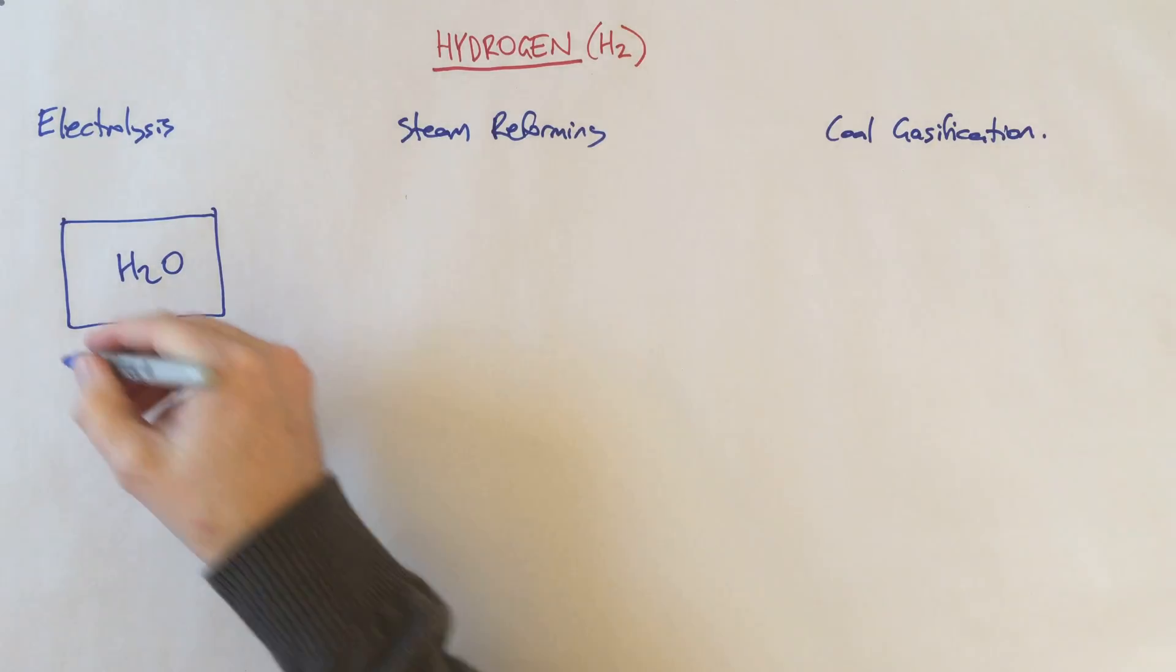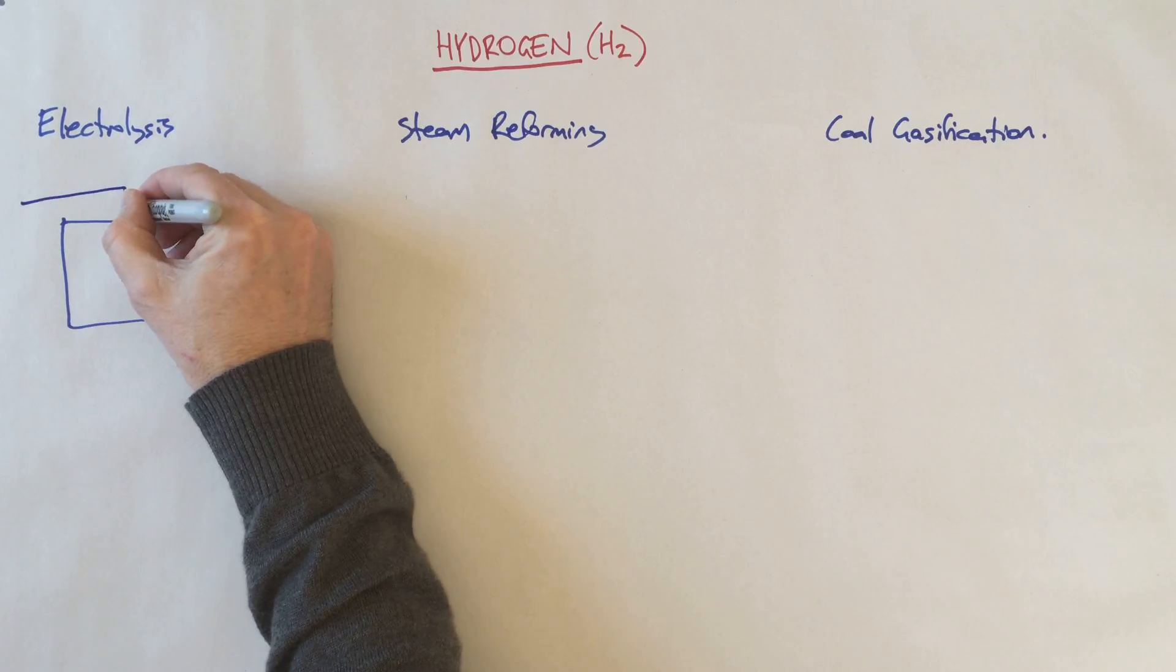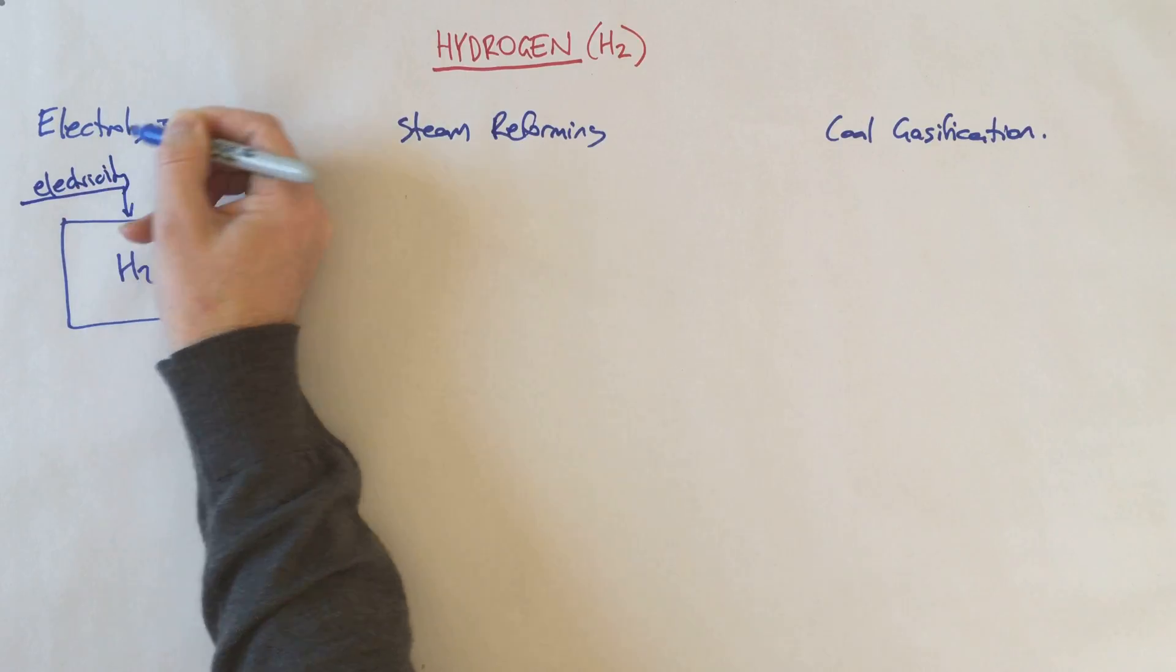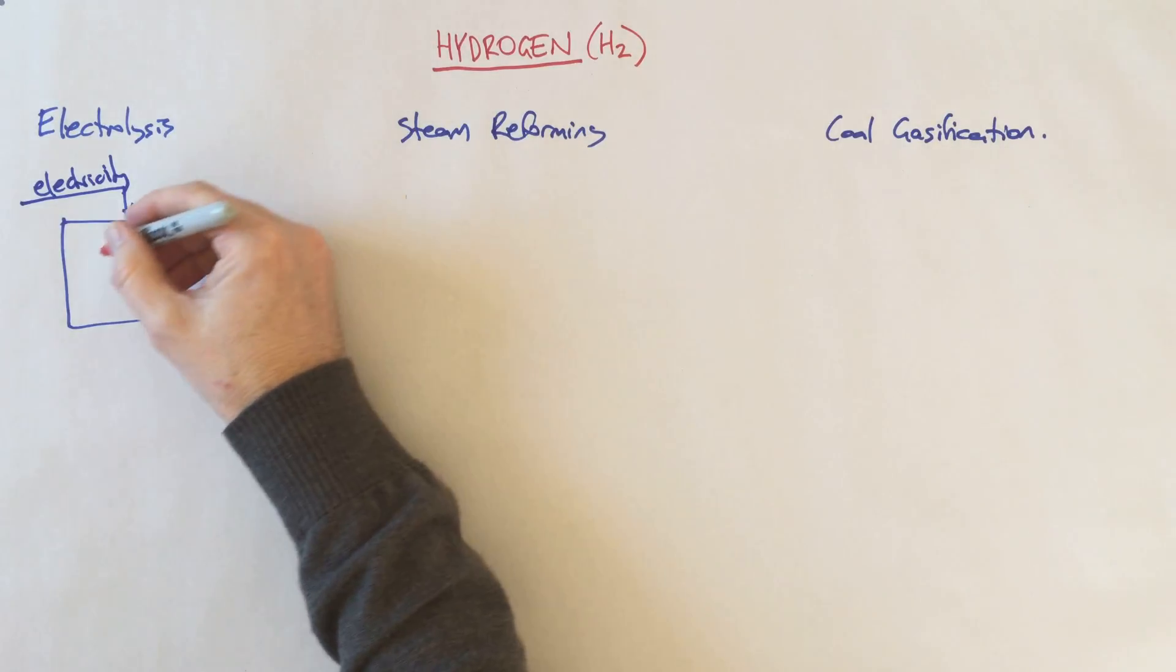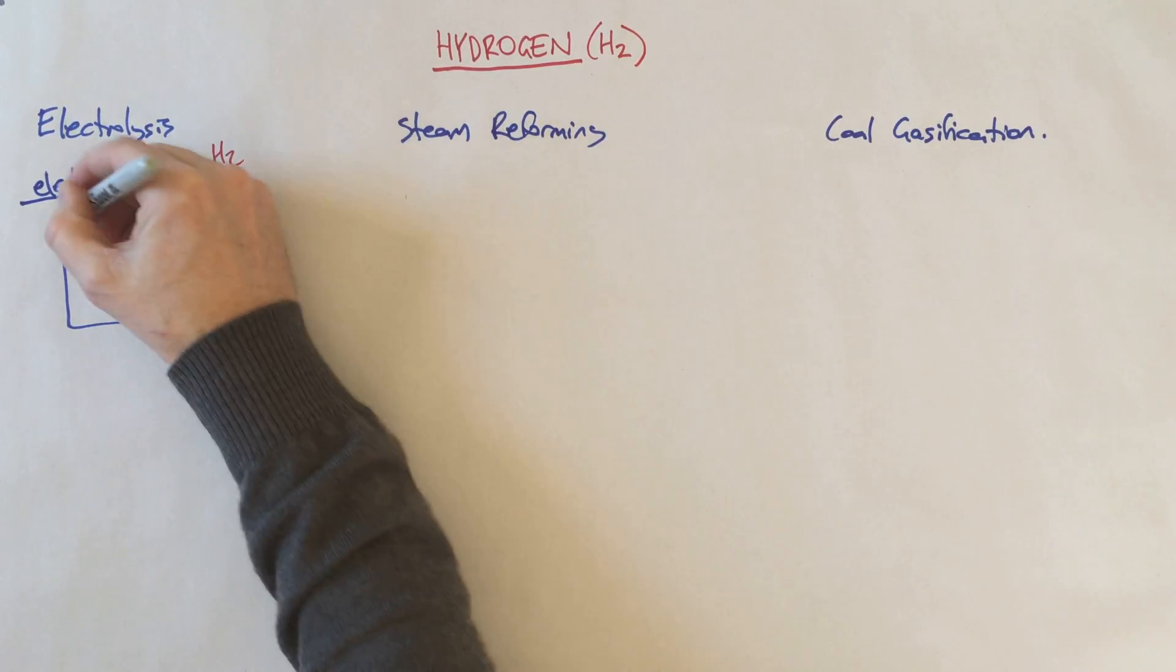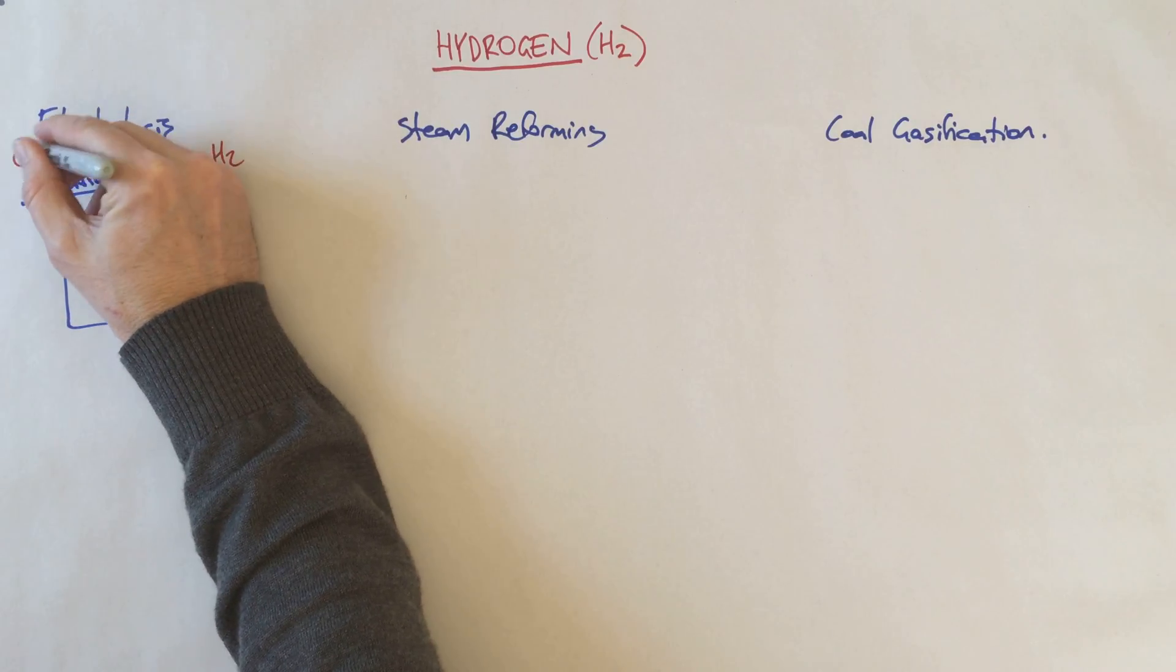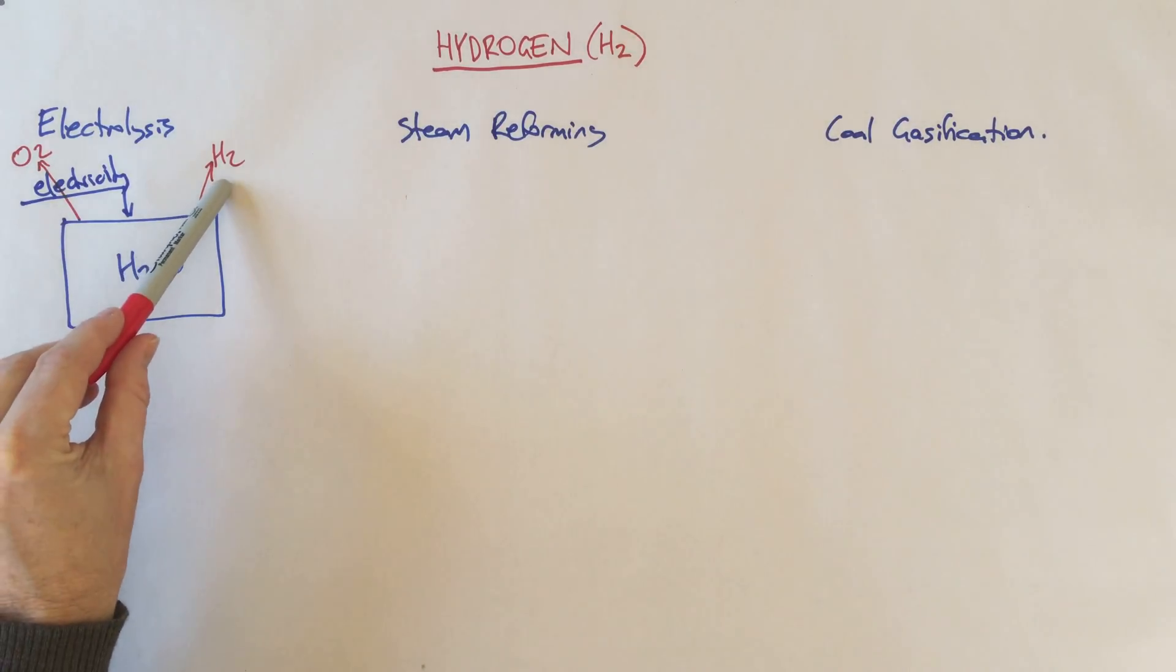What we can do is put some electricity into this system. The effect of that electricity is that we end up with two electrodes. One of which is producing hydrogen gas, the other is producing oxygen gas, O2. So effectively what the electricity does is it splits up the water. It creates hydrogen gas on one side and oxygen gas on the other.